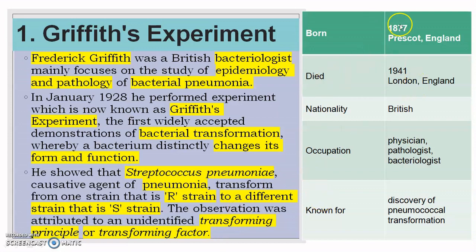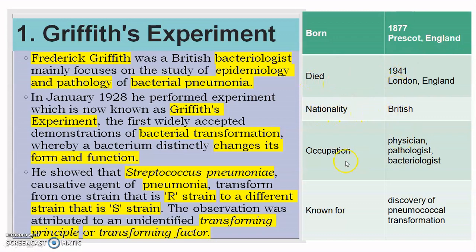Frederick Griffith was born in 1877 in Prescott, England, and died in 1941 in London. He was British by nationality, and his occupation was physician, pathologist, and bacteriologist. He is well known for his discovery of pneumococcal transformation.